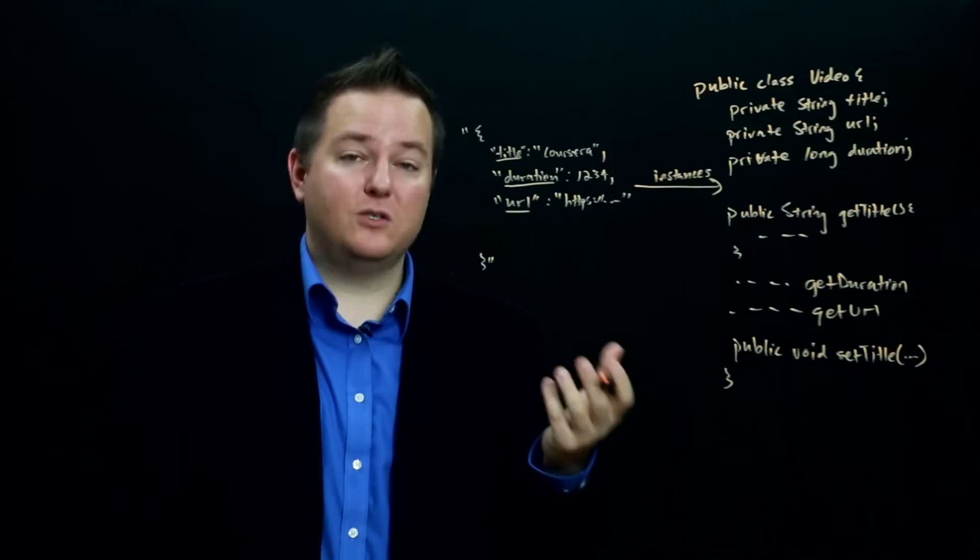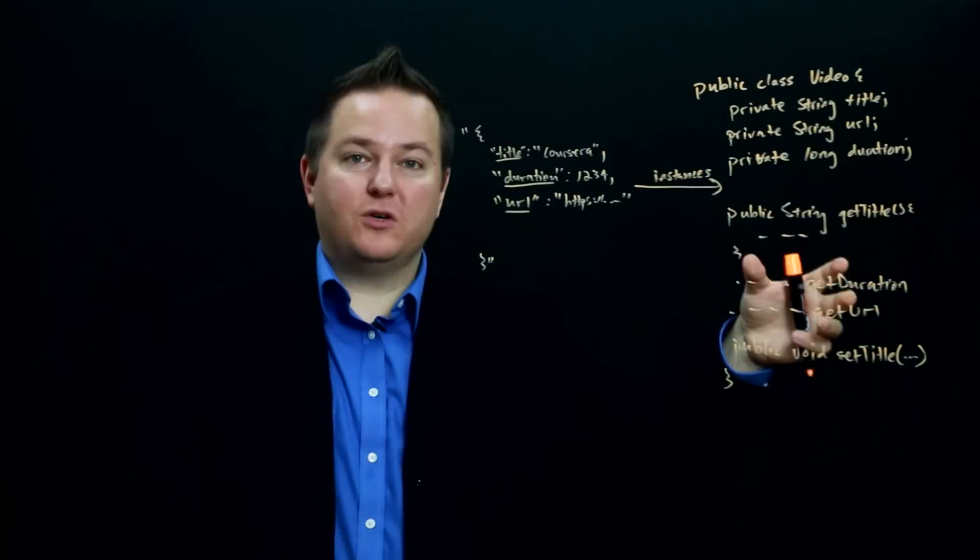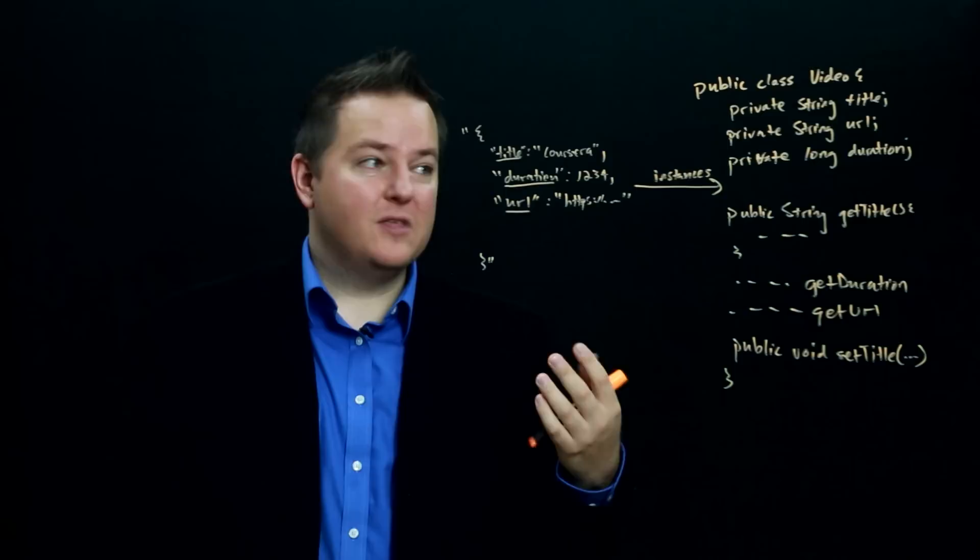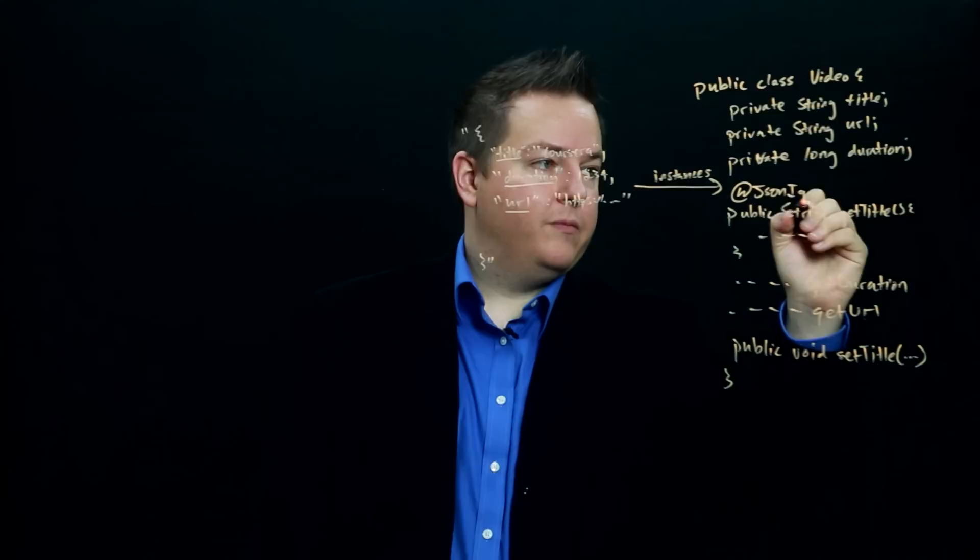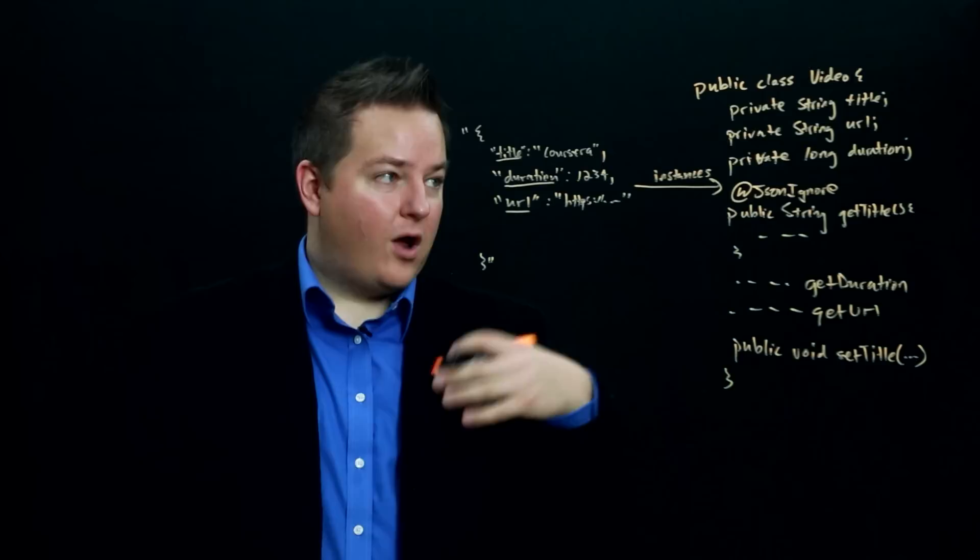One of the other things is you can go and control how Jackson converts your objects to JSON and can go from JSON back to your objects through a series of annotations. So you can do things like at JSON ignore to tell Jackson properties of your objects that you don't want converted into JSON and brought from JSON back into your object to help it know things that you don't care about.